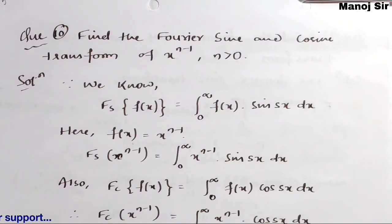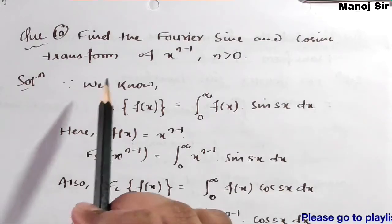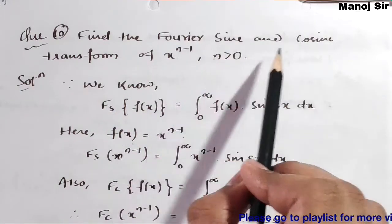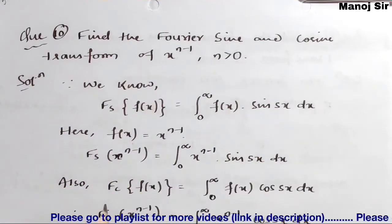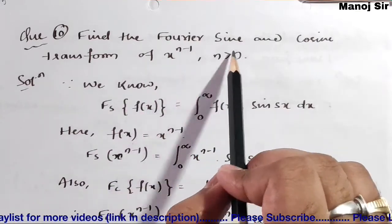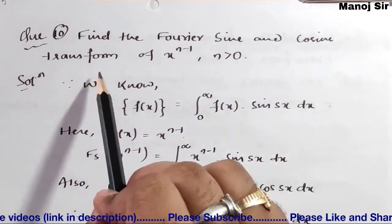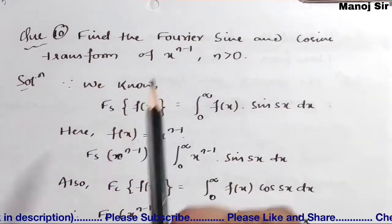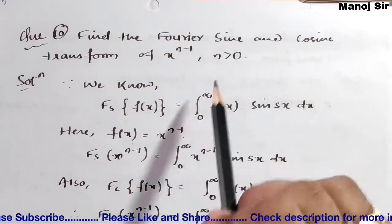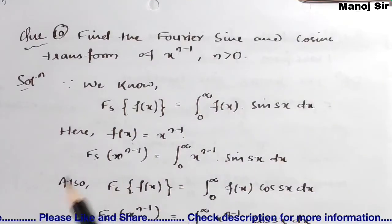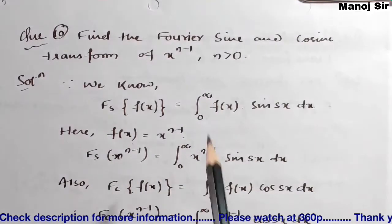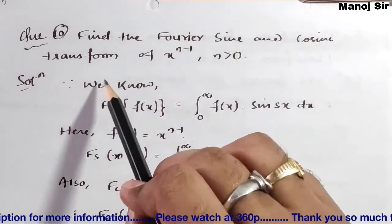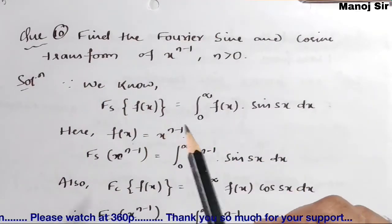Let us try to solve this very important problem. The question says: find the Fourier sine and cosine transform of x to the power n minus 1, where n is greater than 0. So we need to find both the Fourier sine transform as well as the Fourier cosine transform.